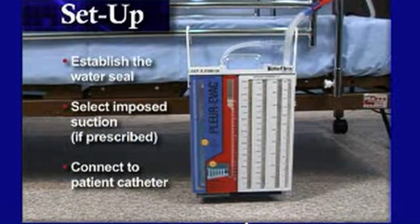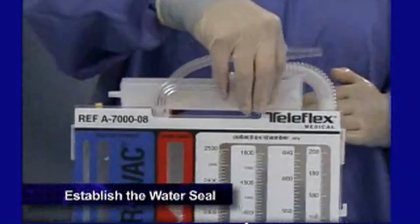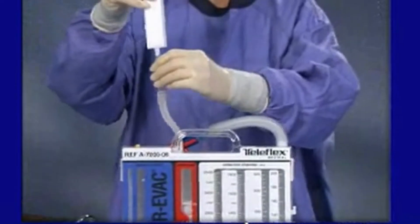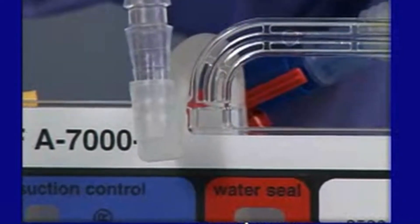Setting up the Plurivac A7000 series is a three-step process. The first step is to establish the water seal. Fill the water seal chamber through the short suction tube using the enclosed funnel. Crimp the tubing by holding the funnel below the top of the Plurivac unit.